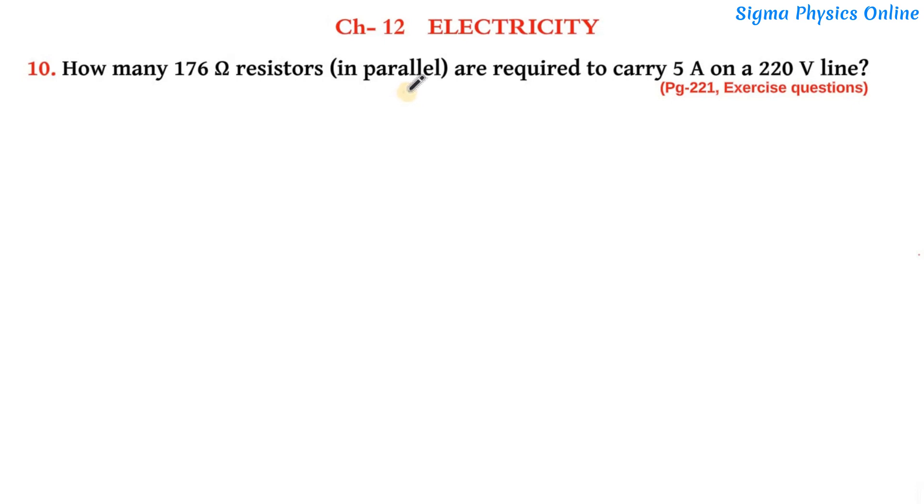We have drawn the circuit diagram. In this question, we have a resistance R. When this resistance R is connected in this circuit across a potential difference of 220 volts, a current of 5 amperes flows through it. Now we have to find out what is the value of this resistance.